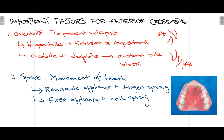Sometimes when crossbite has been corrected, open bite develops, increasing the chances of relapse. Open bite is corrected by extrusion — hyperocc­luding the teeth so that overbite can develop. Thirdly, when both deep bite and crossbite conditions are present, we place a posterior bite block which helps in the treatment plan for anterior crossbite.